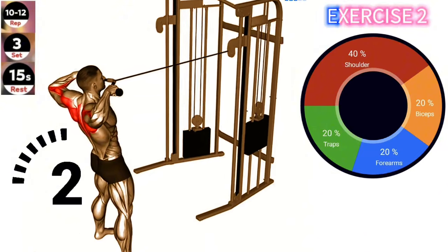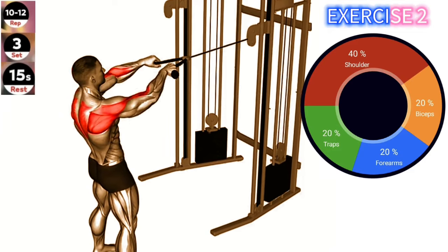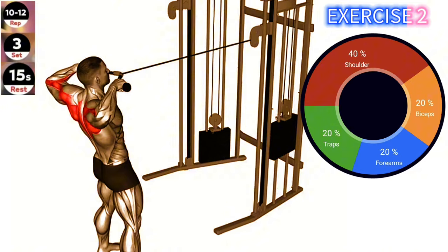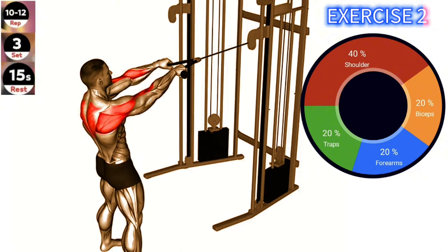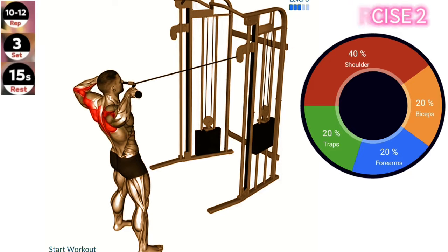Exercise 2. Cable Standing Face Pull. Focus on squeezing your shoulder blades together as you pull the rope towards your face. This will help target the rear delts and upper back muscles effectively. Stand facing the cable machine with a rope attachment at chest height.